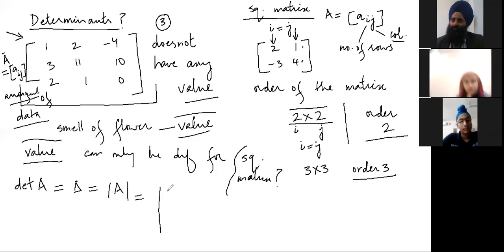I will tell you how you find the value. 1, 2, minus 4, 3, 11, 10, 2, 1, 0. Just these two lines. And just these two lines, there are methods to find out the value of this matrix. I will be telling you in next lecture. Thank you.